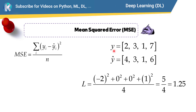For this specific example, we calculate Y minus Y-hat: (2−4)² + (3−3)² + (1−1)² + (7−6)², all divided by 4, the number of values. This is the mean — the average — of the squared errors, so it is called MSE. If you calculate all of that, the result is 1.25.